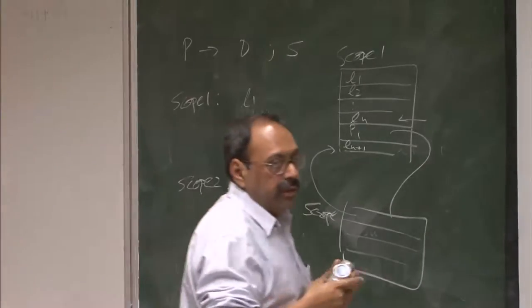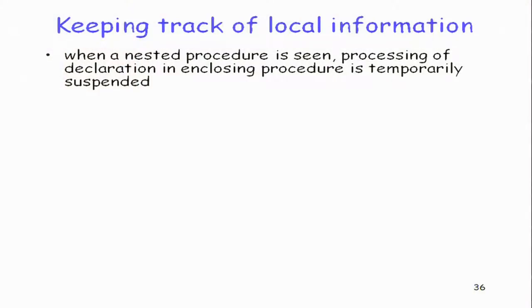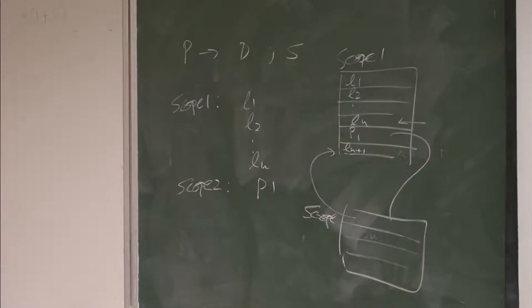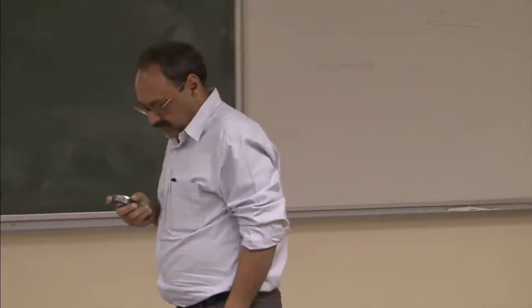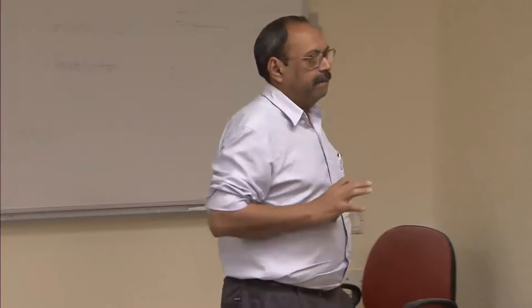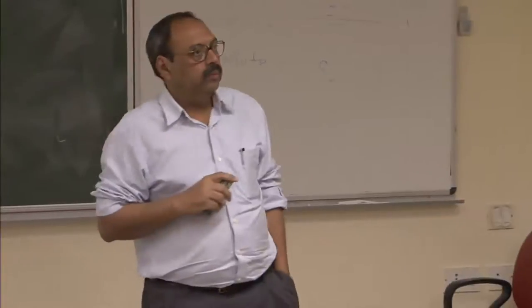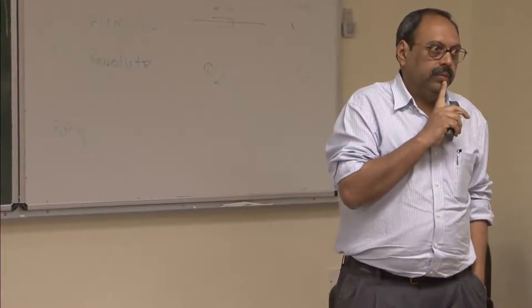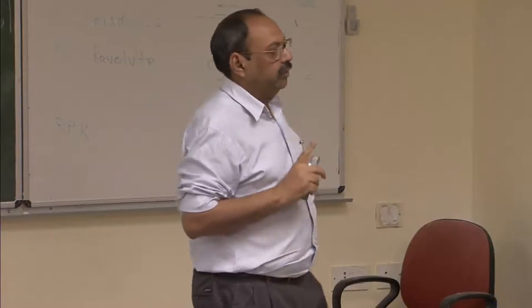Is the problem definition clear before I get into the implementation? A student asked: suppose we have two classes and we need to keep track of a single table for both — once we go back to the previous offset, the new offset that we had is destroyed. How do we keep track of that?